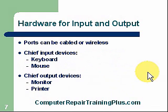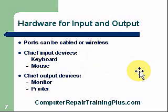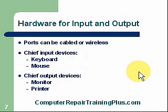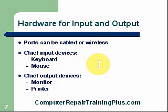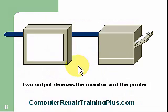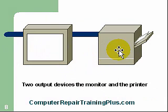Hardware for input and output — ports can be cabled or wireless. Today we have wireless computers, which is a great convenience for sitting in the living room with a laptop and getting on the internet. Chief input devices are the keyboard and mouse; our output devices are the monitor and the printer. These are our two primary output devices — we get information delivered to them. We can read information on the monitor and see it printed on the printer.